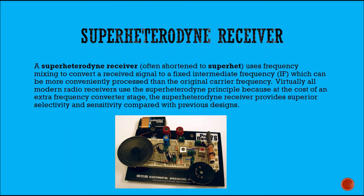Now we come to the superheterodyne receiver. A superheterodyne receiver, often shortened to a superhet, uses frequency mixing to convert a received signal to a fixed intermediate frequency which can be more conveniently processed than the original carrier frequency. Virtually all modern radio receivers use the superheterodyne principle because it provides superior selectivity and sensitivity compared with previous designs.